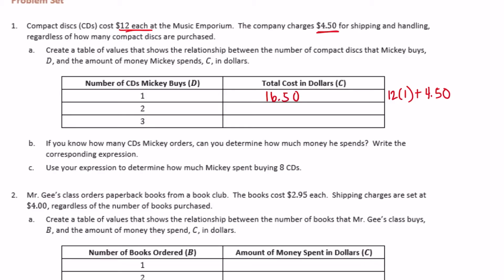If he bought two CDs, 12 times two, plus $4.50 — that'd be 24 plus $4.50, which is $28.50. And if he bought three, 12 times three plus $4.50 — 12 times three is 36, and 36 plus $4.50 would be $40.50.